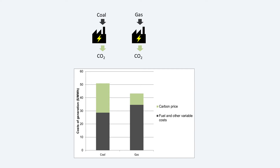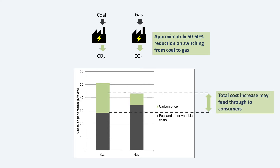Instead of being cheaper to run the coal plant, it is now more expensive. The gas plant will run instead of the coal plant, and emissions will be reduced by around 50 to 60%. The total cost of generating electricity increases, and this will typically feed through to prices to households and businesses. This may reduce electricity use as a result, leading to a further reduction in emissions, but this effect will usually be much smaller than the effect of switching fuels.